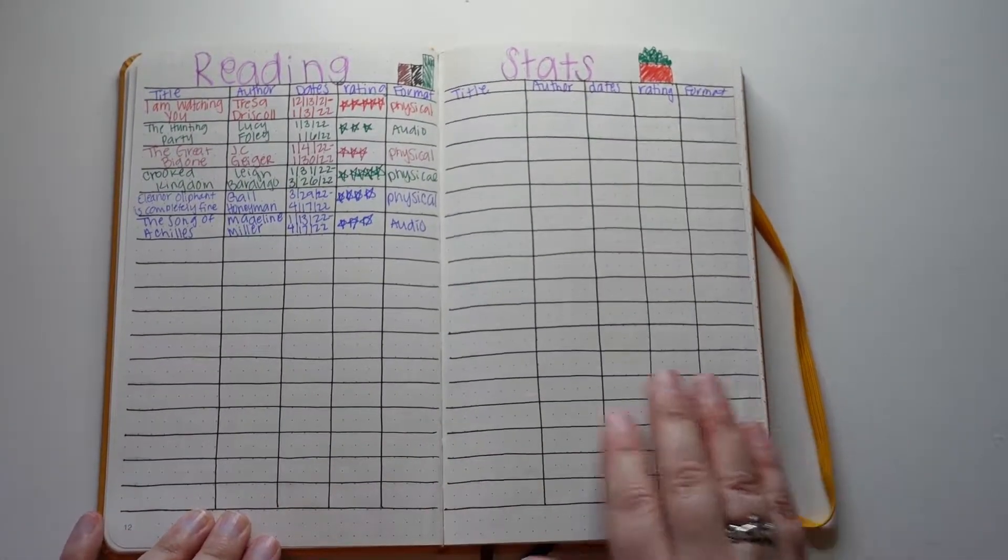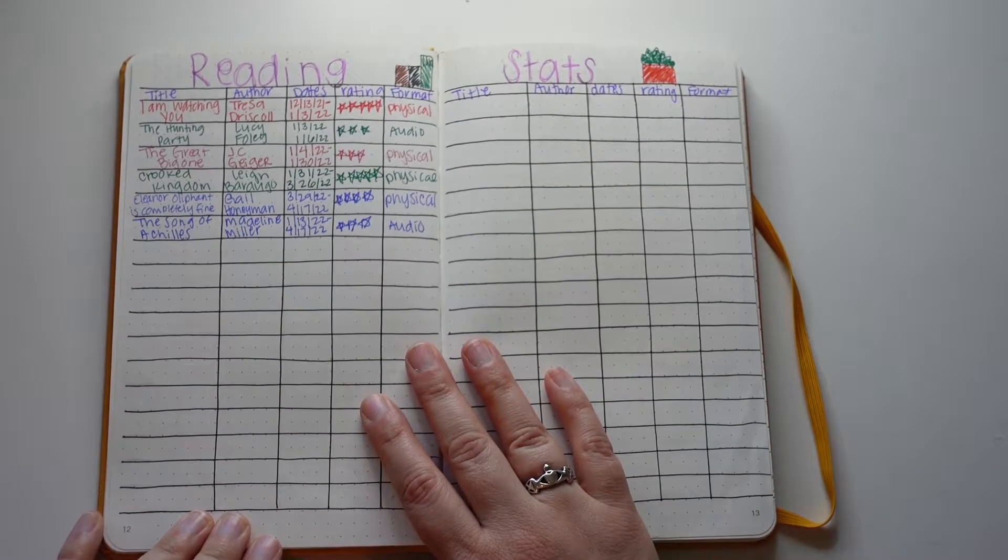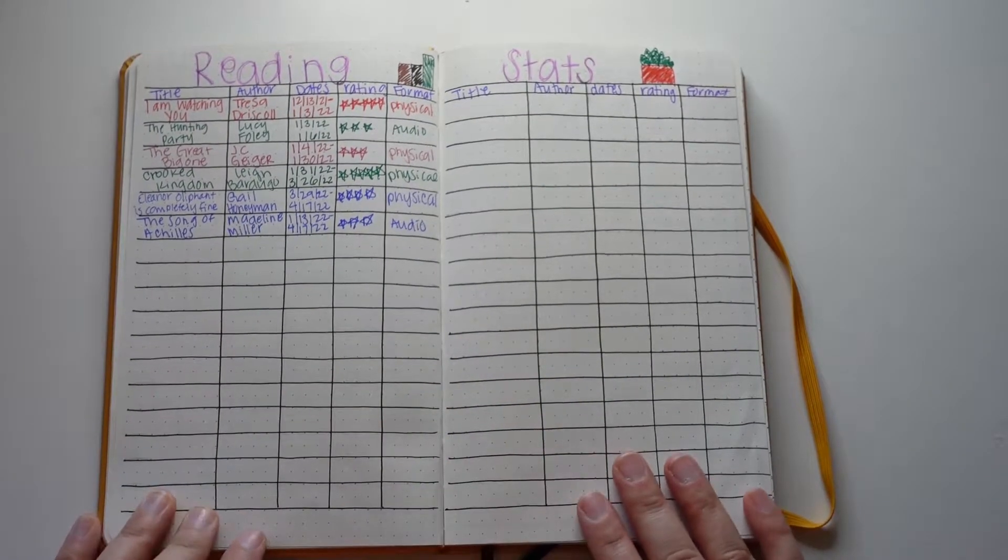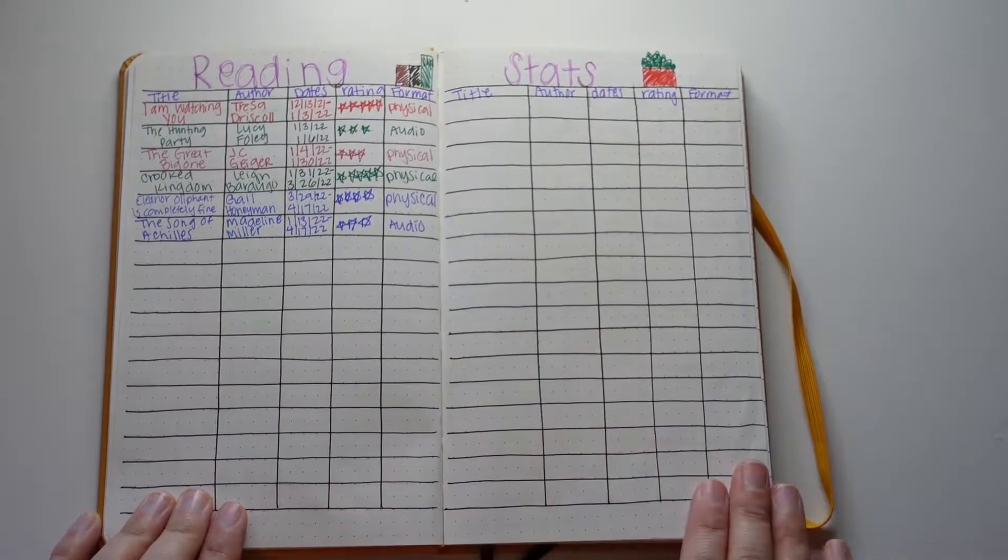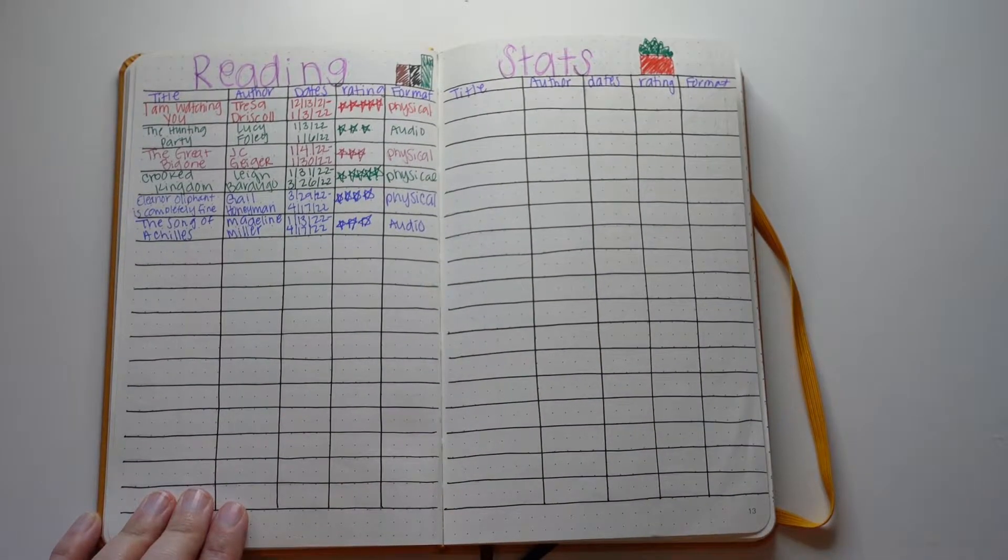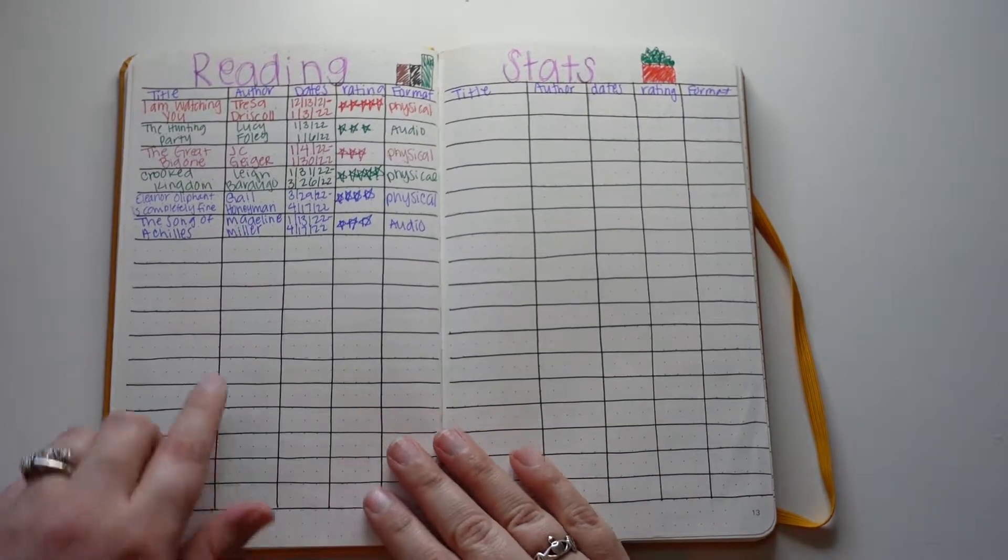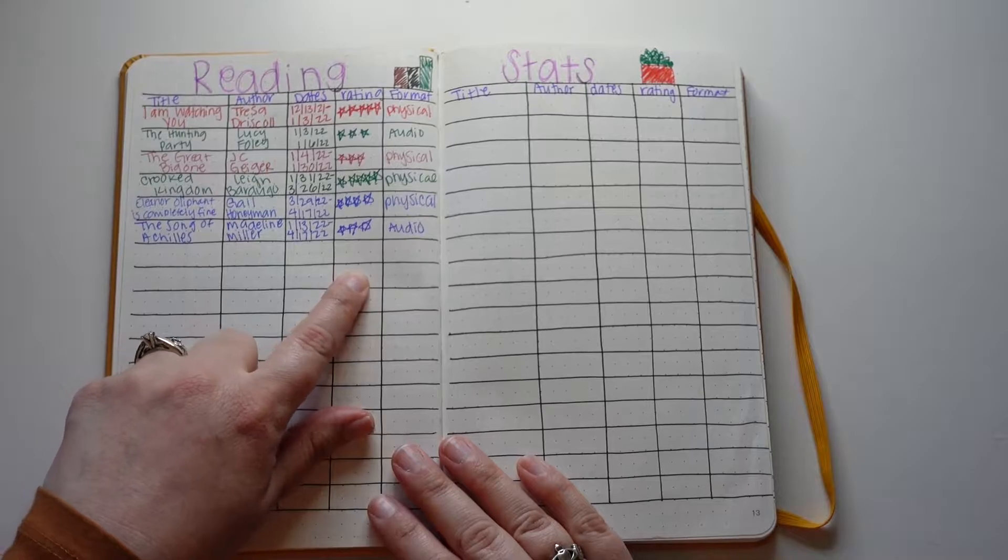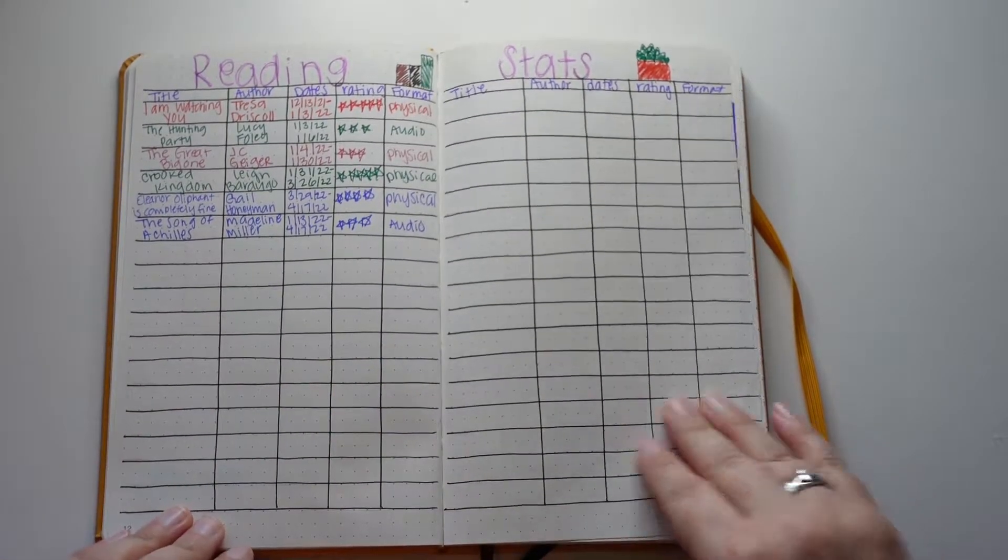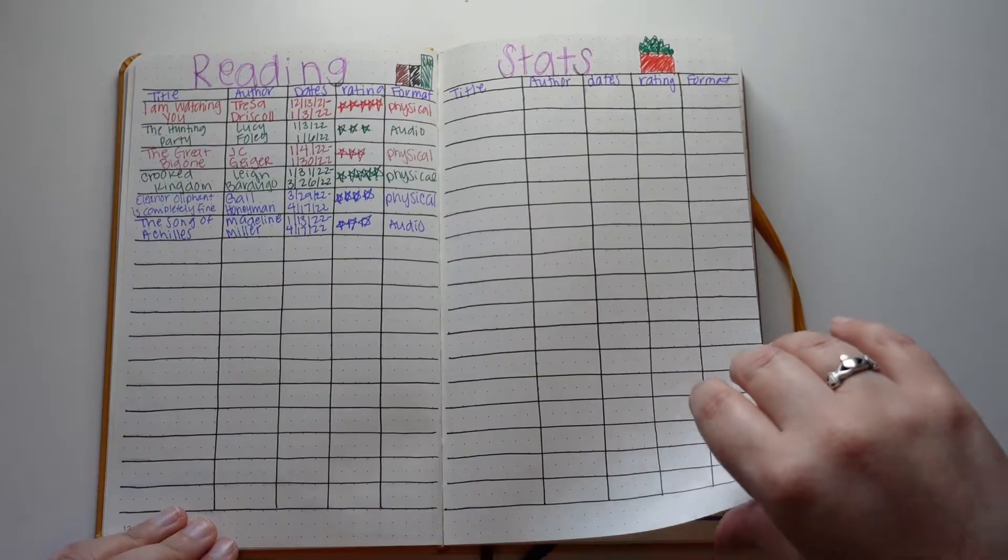These are my reading stats. As I finish a book I will add the stats to this spread. Hopefully by the end of the year it'll all be filled out. For the categories I have title, author, dates that I read it, my rating, and the format, whether it was a physical book or an audio book.